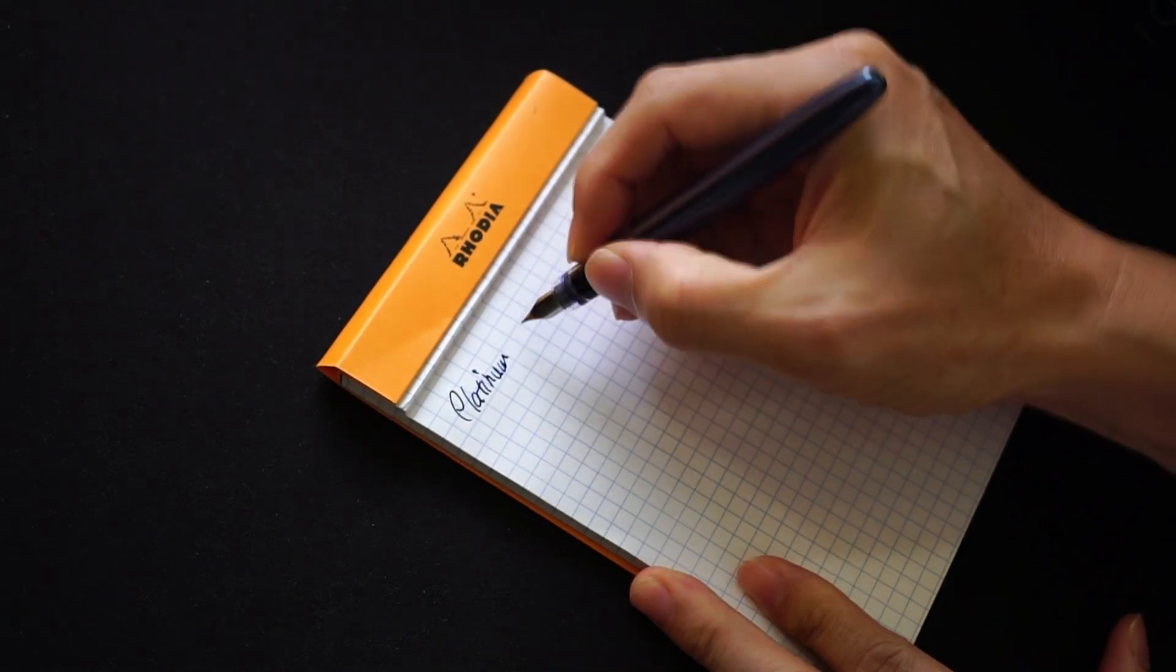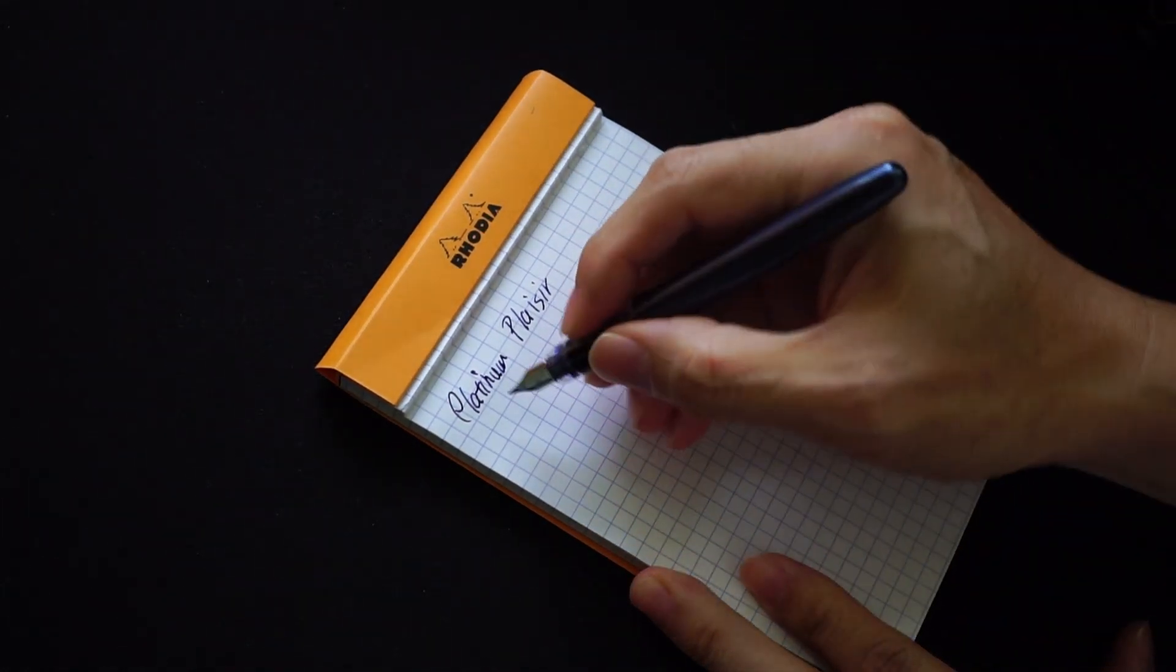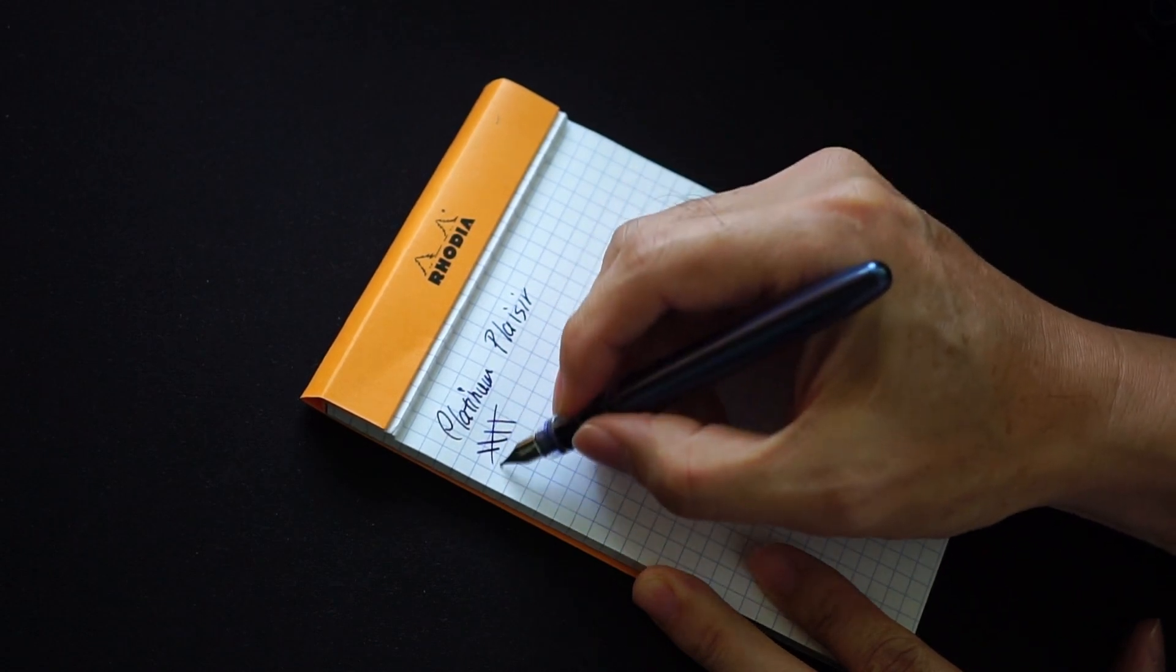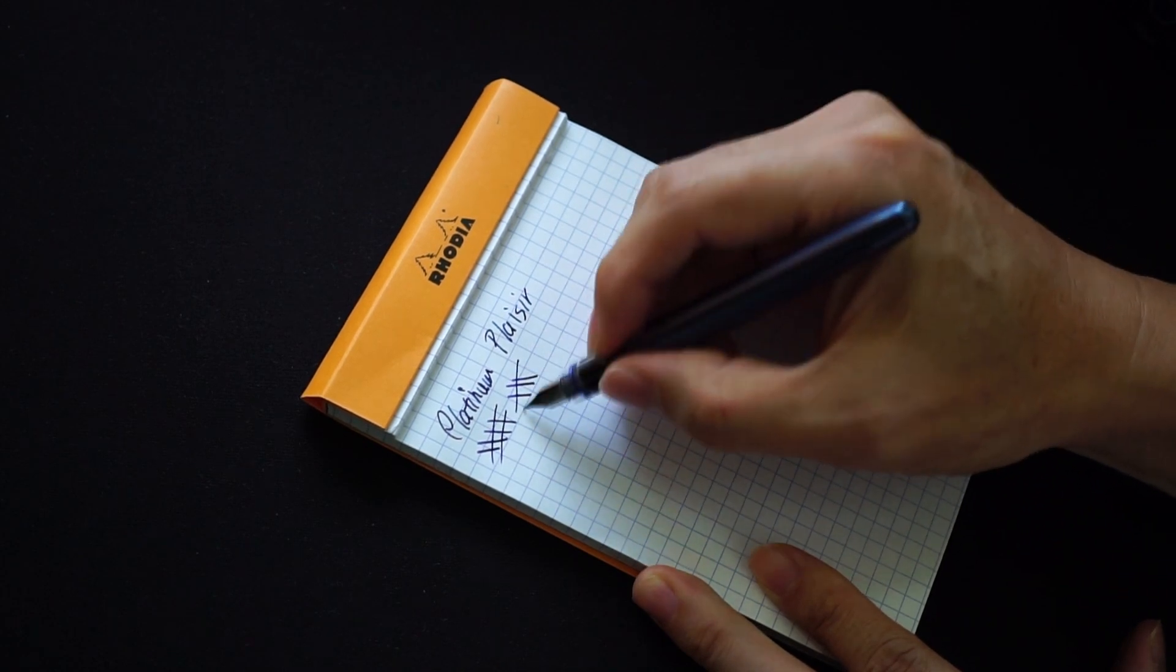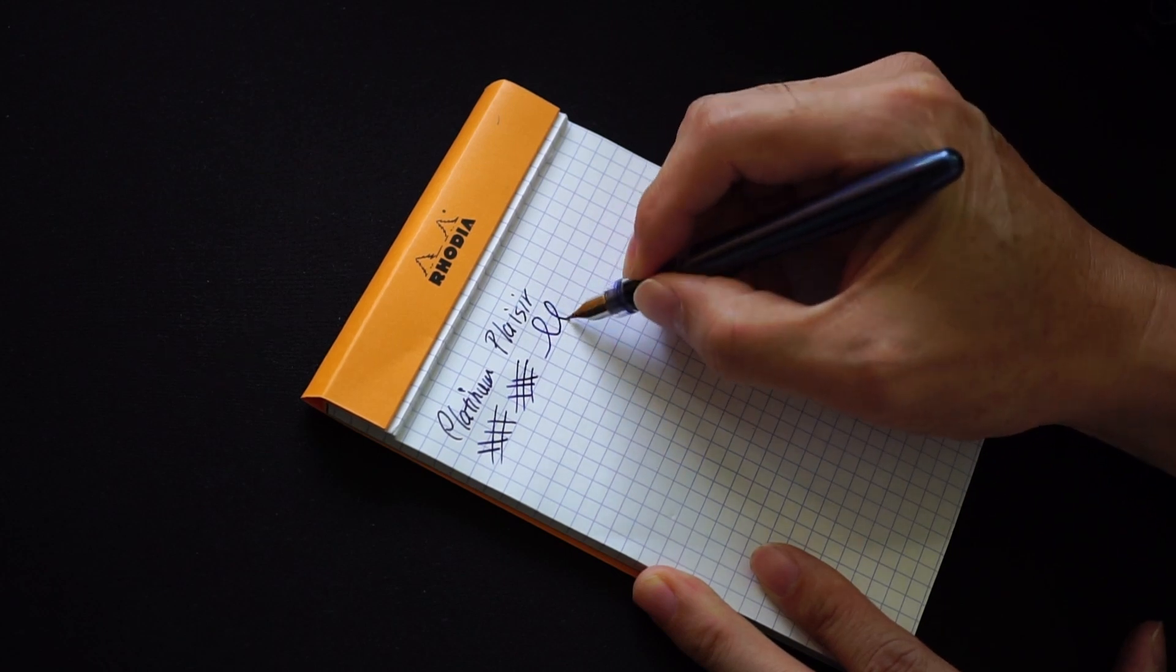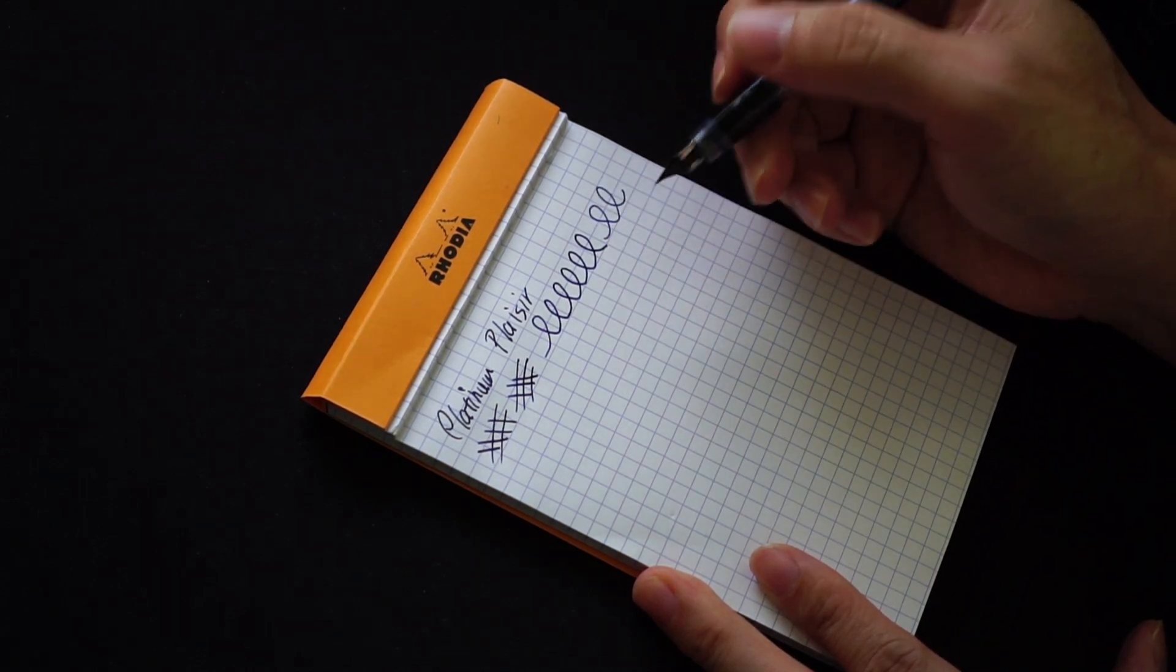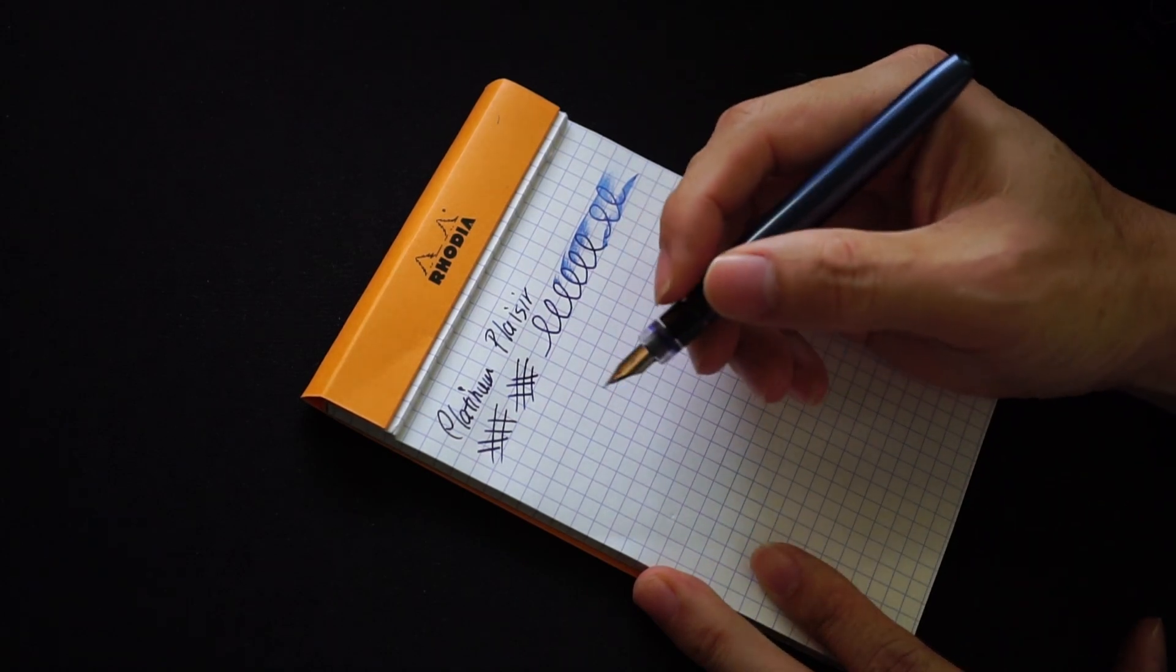In terms of things like line variation, not much. I mean you can press, it is a relatively soft nib and it's very smooth. And not sure whether it's coming out on the camera but it is pretty, I mean it's relatively wet, probably medium wetness.